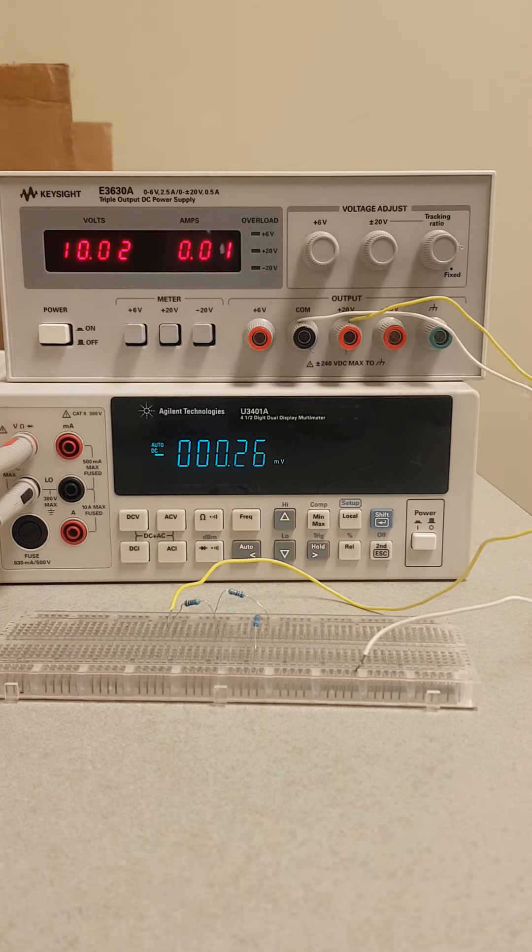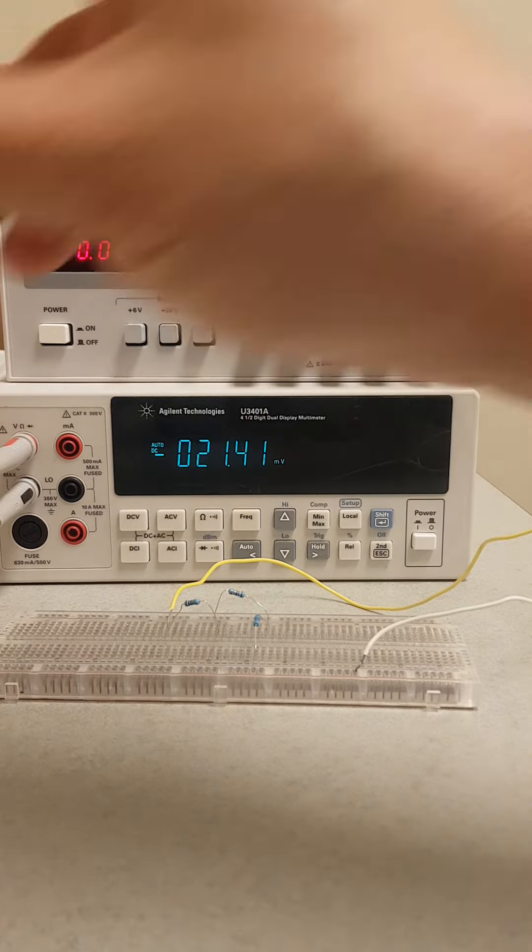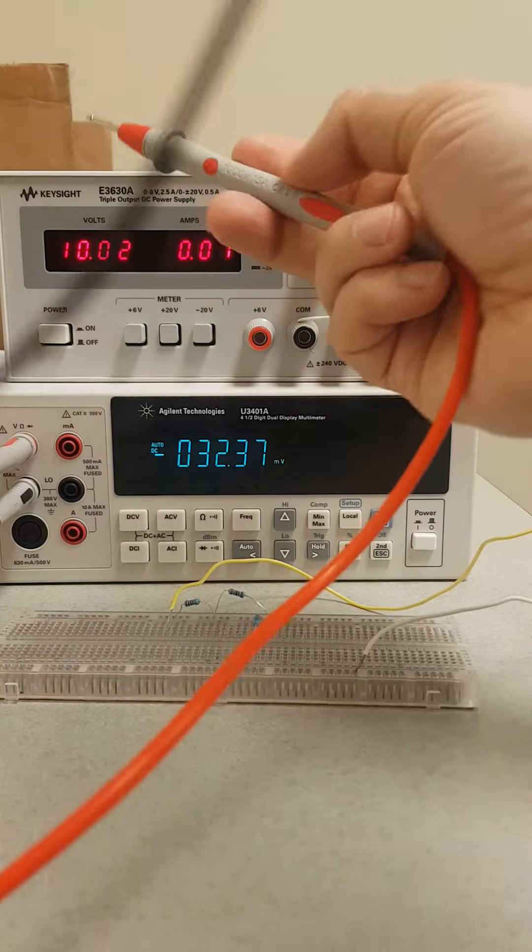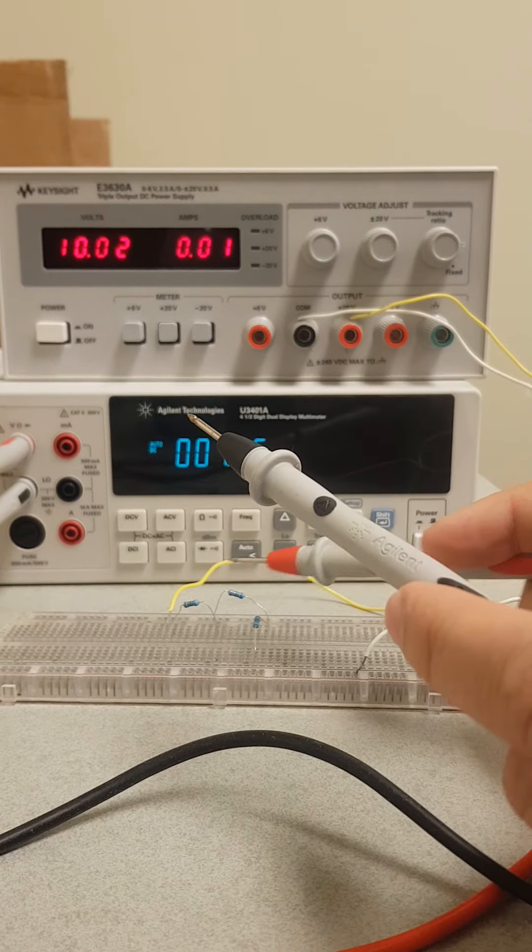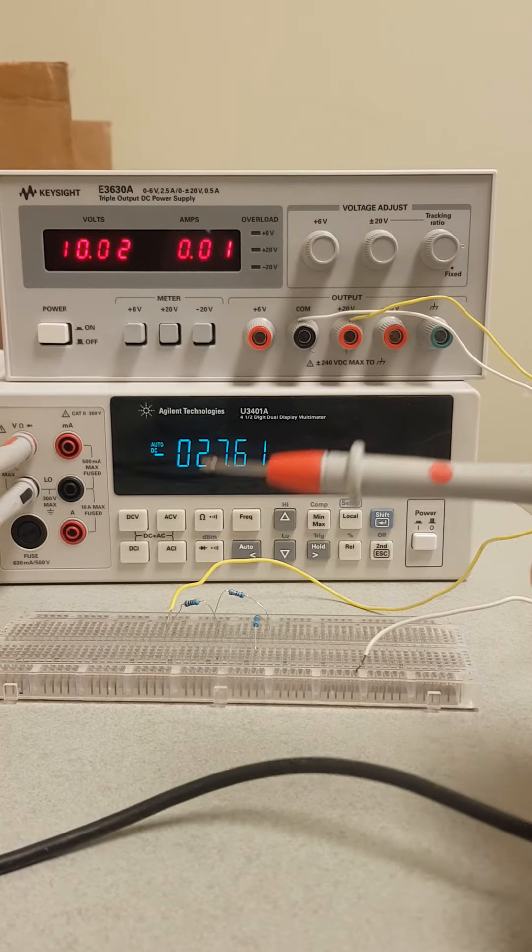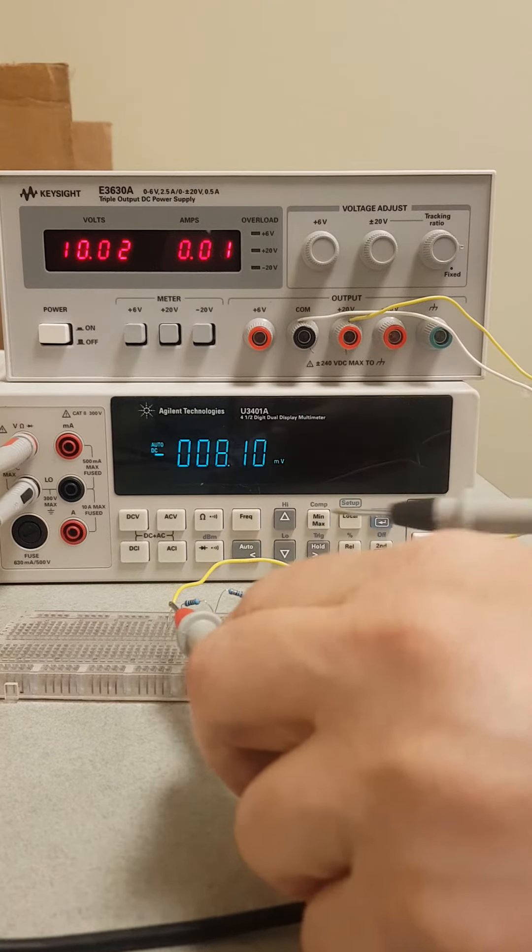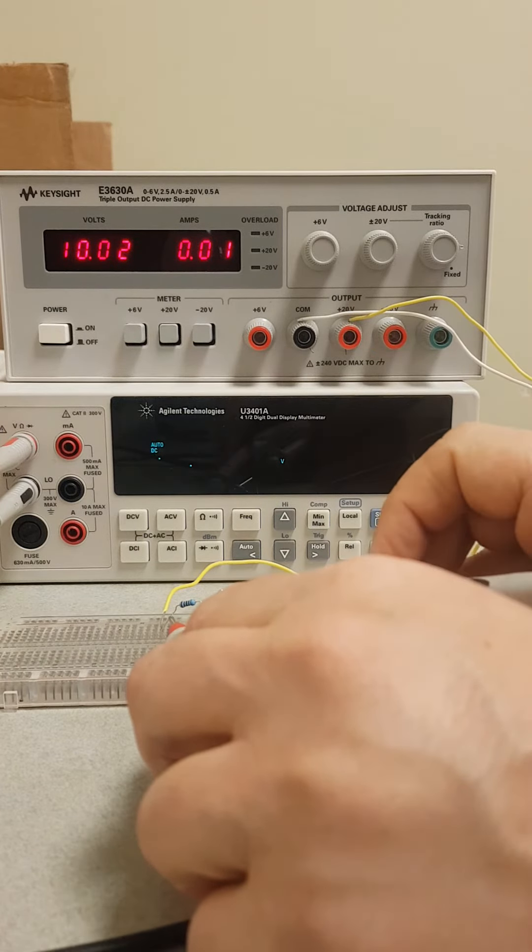So this is the same circuit. Here we have the 10 volt connected between these resistors: the thousand, the 330, and the 220 ohms resistance. So let's see here. If we connect the voltage here at the 1000 ohm...